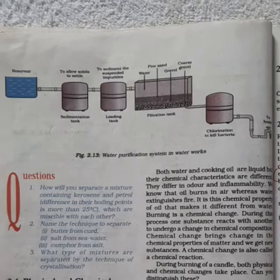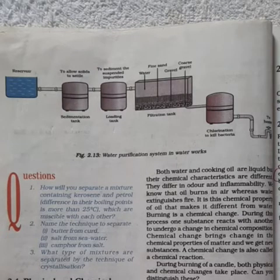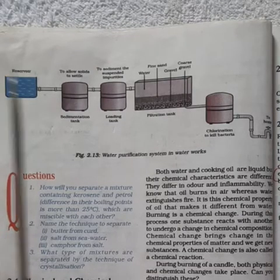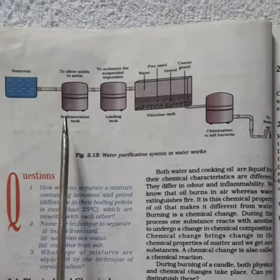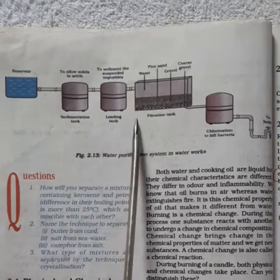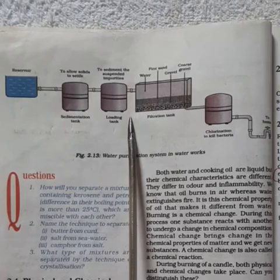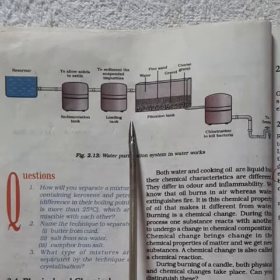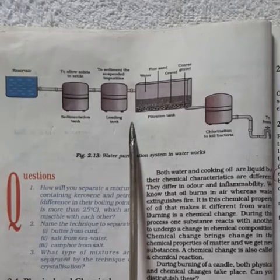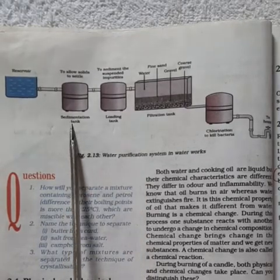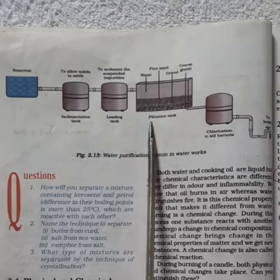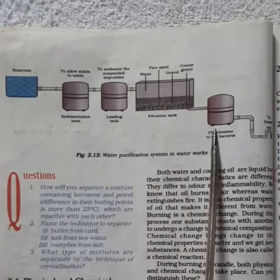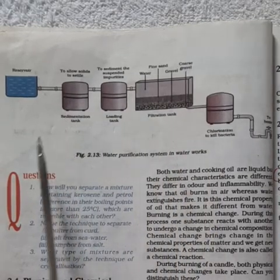In cities, drinking water is supplied from water works. A diagram is given to study the water purification system in water works. In order to purify the surface water, we need to follow four steps: sedimentation, loading, filtration, and chlorination. Let us study in detail.